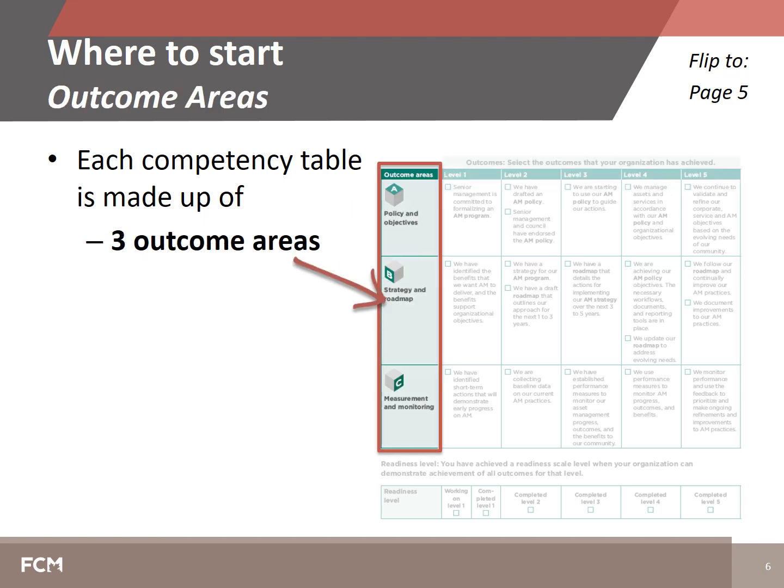Let's consider the three outcome areas, which you can see on the left-hand side of the competency table as blocks A, B, and C. These outcome areas represent important components of the competency that a community would need to work on. For example, for policy and governance, the outcome areas are policy and objectives, strategy and roadmap, and measurement and monitoring.